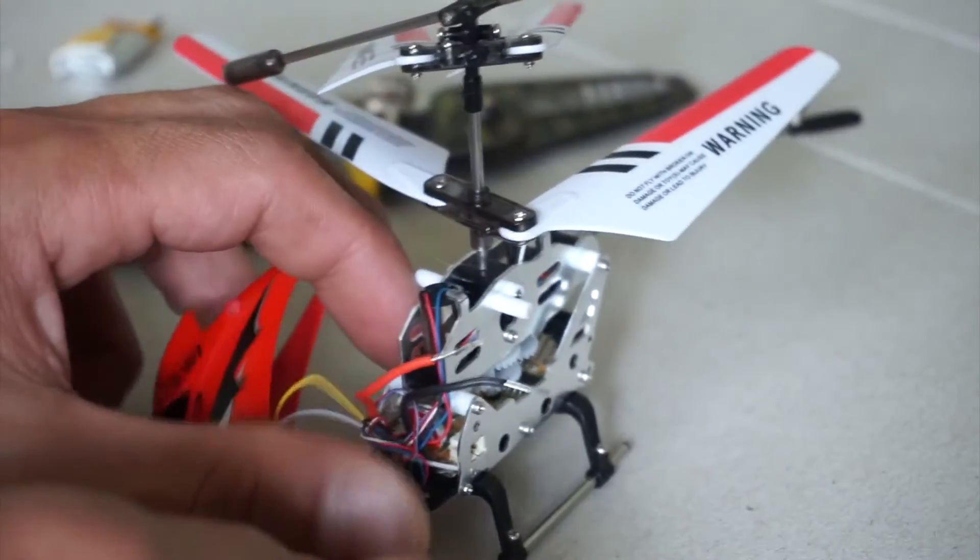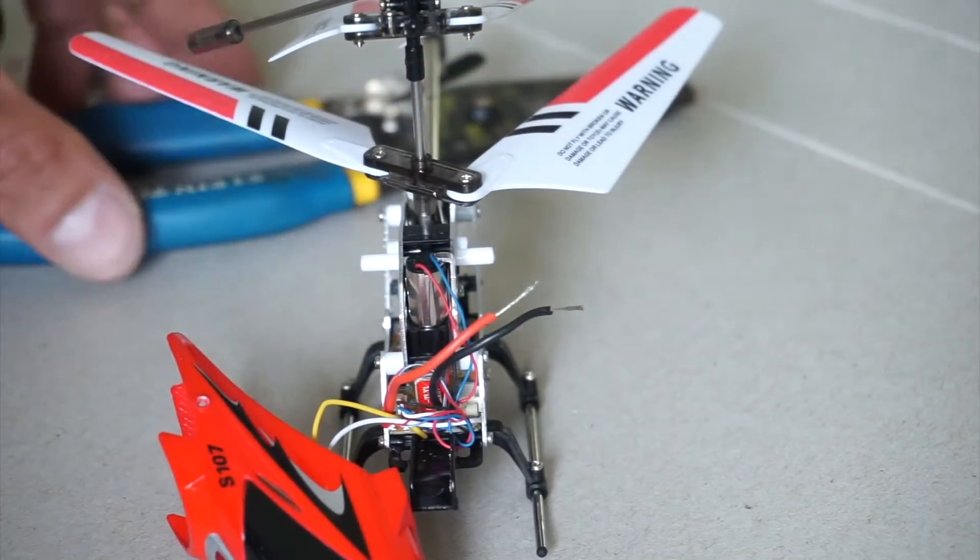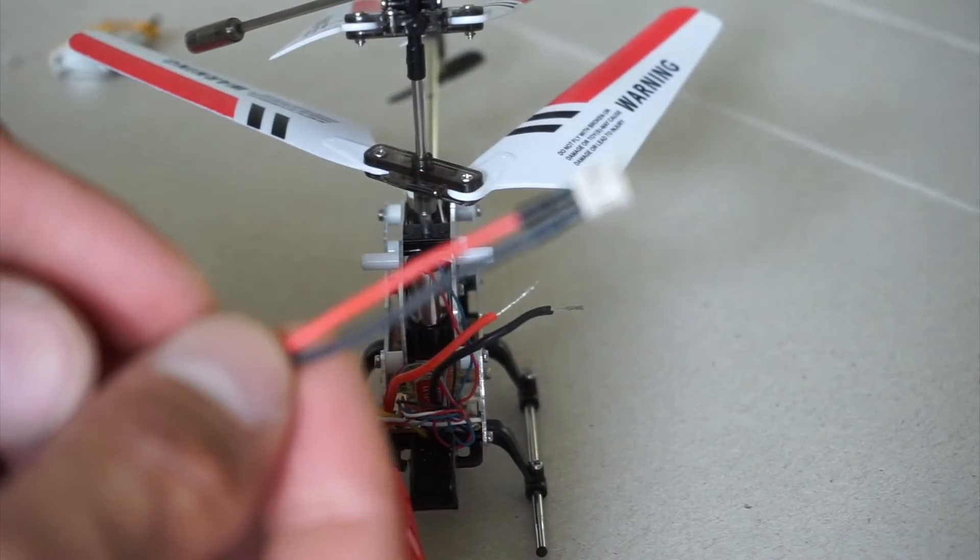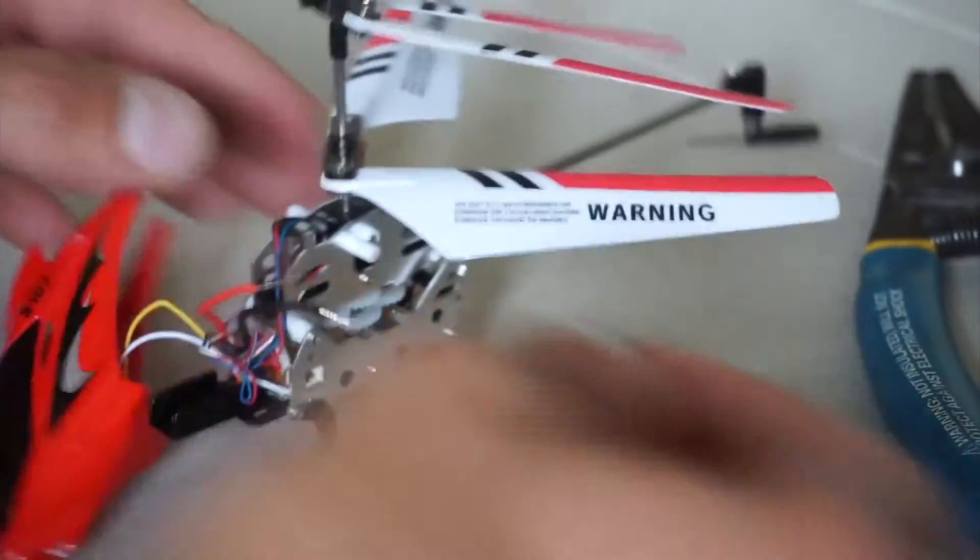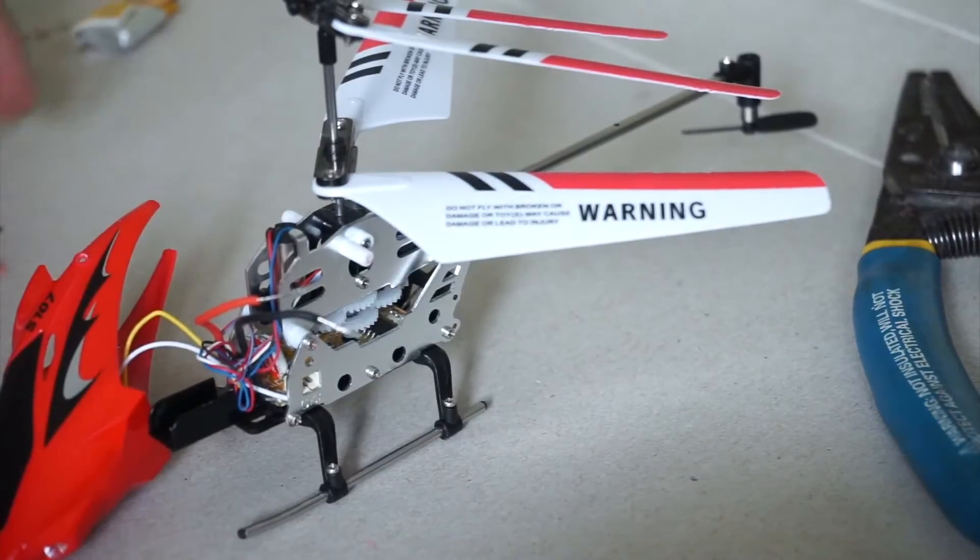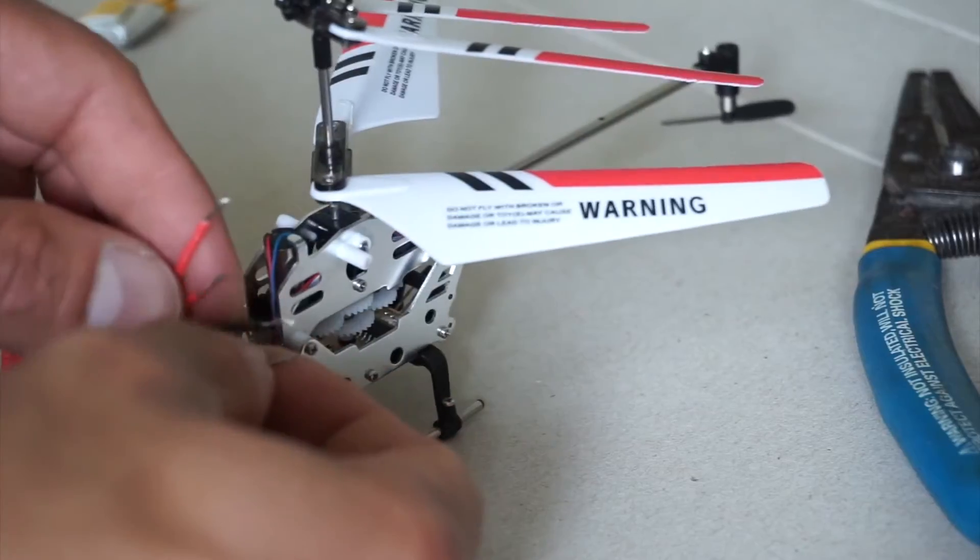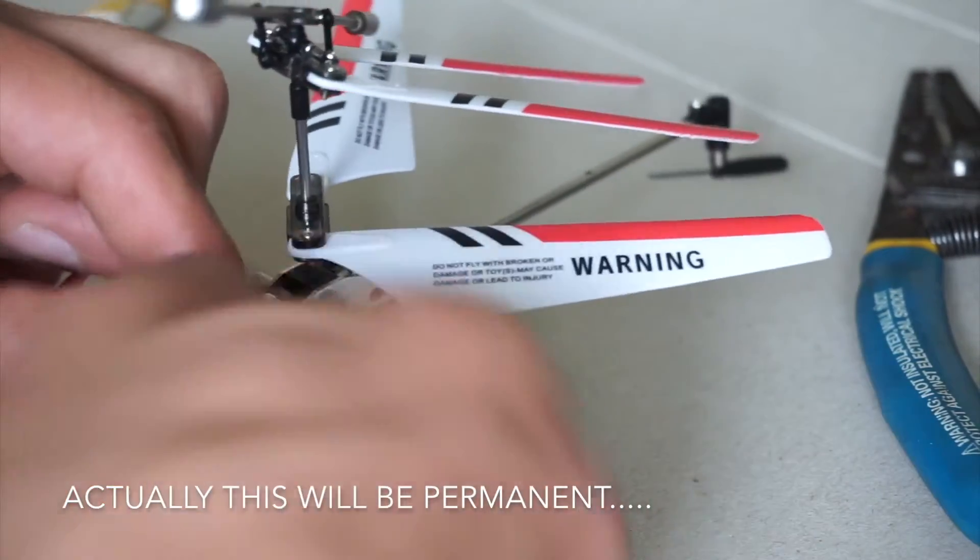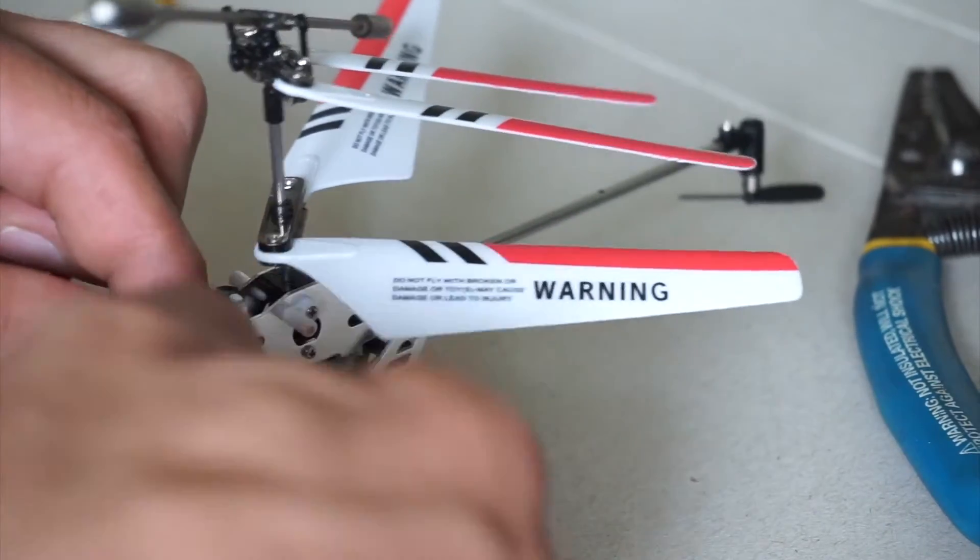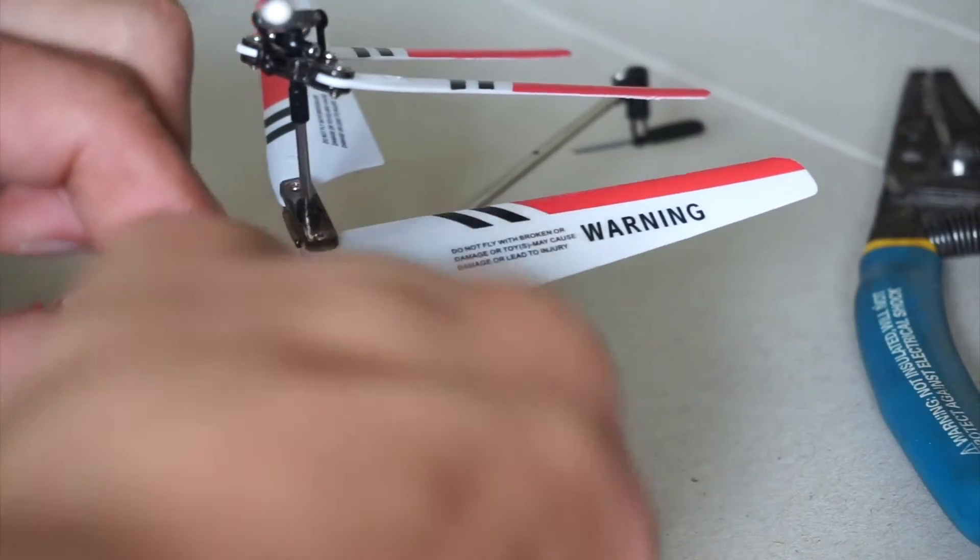Now we have the two leads from the battery right there. What we need to do is get this connector stripped. Unfortunately this is going to have to be a temporary connection here for now. I'm going to buy some heat shrink couplings to make this connection permanent, but for now I'm just going to twist and twist.